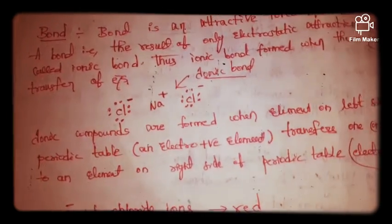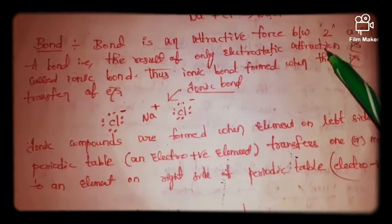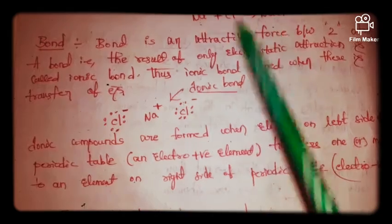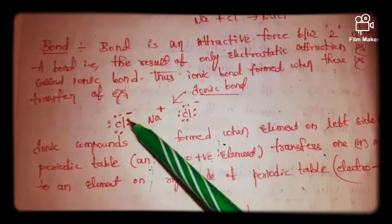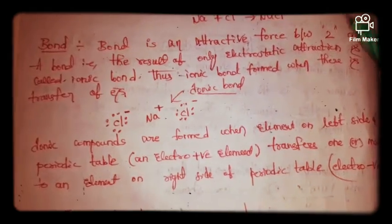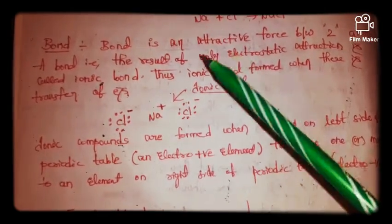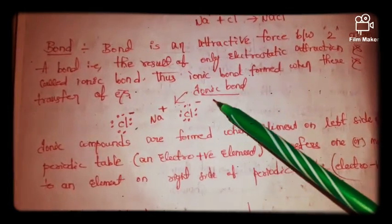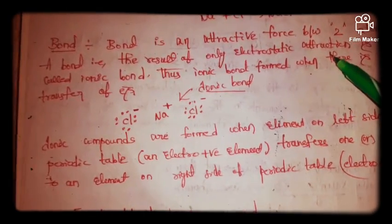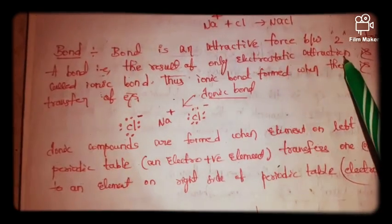What is a bond? A bond is an attractive force between two atoms. A bond is formed as a result of electrostatic attraction.